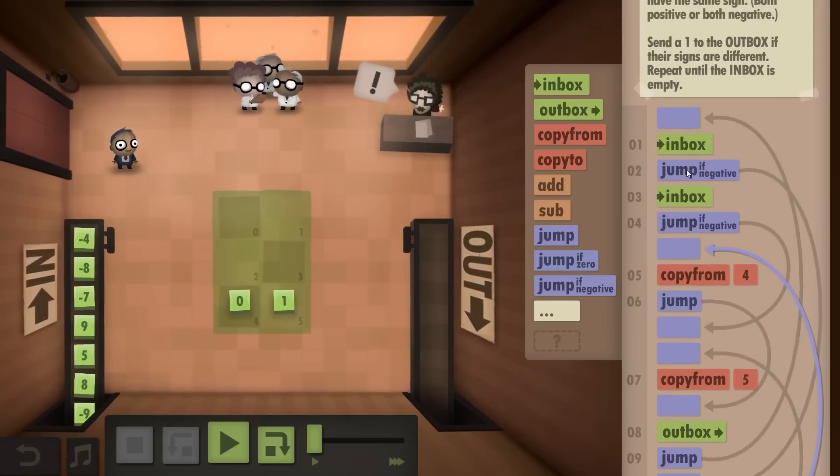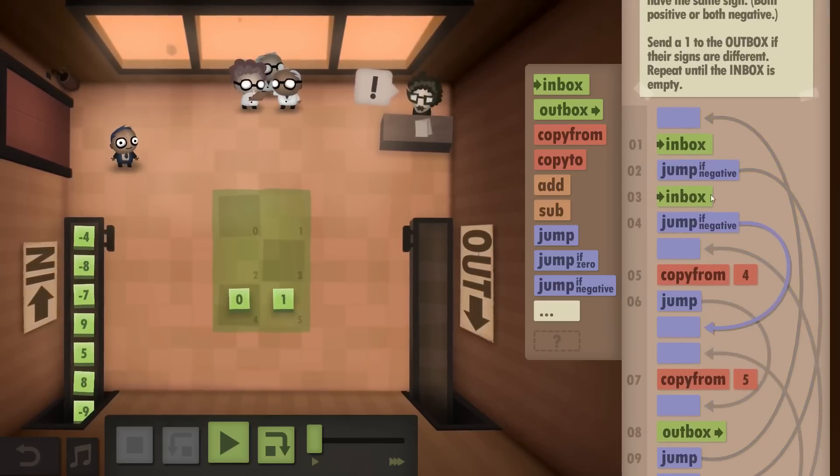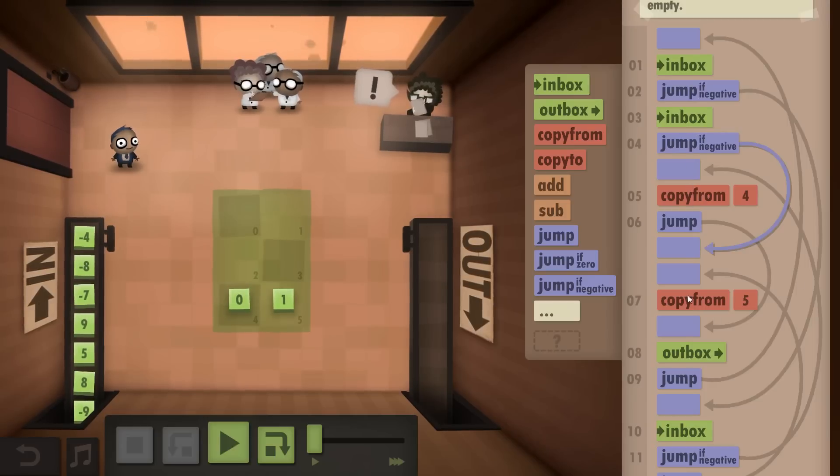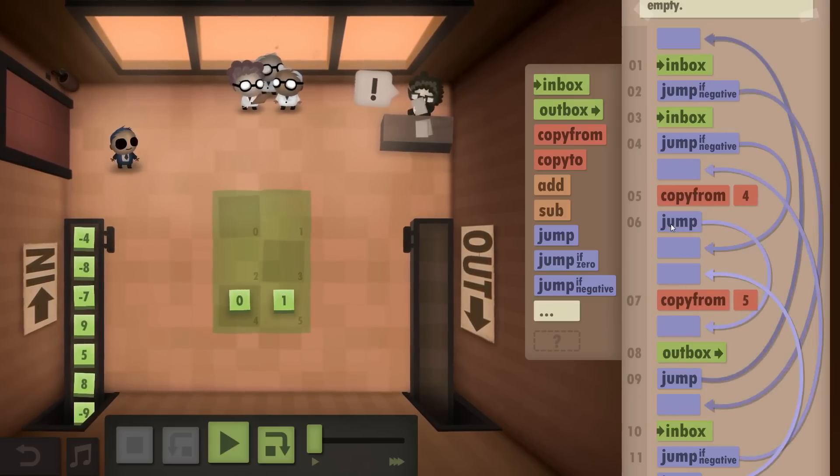If the check says not negative, you branch out again. If that thing is then negative, copy from 1. If it's not negative, copy from 4.